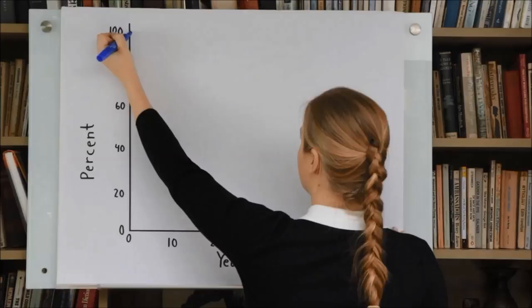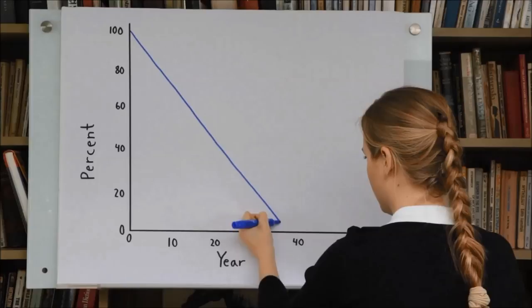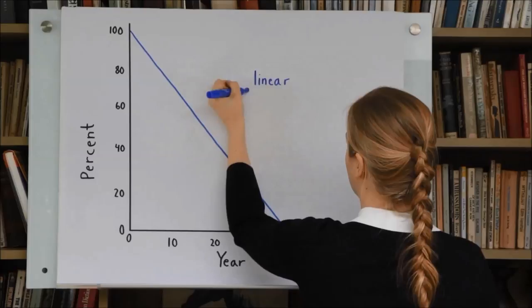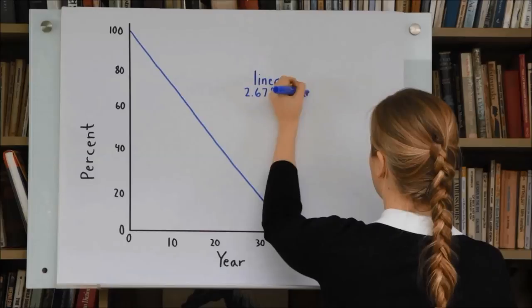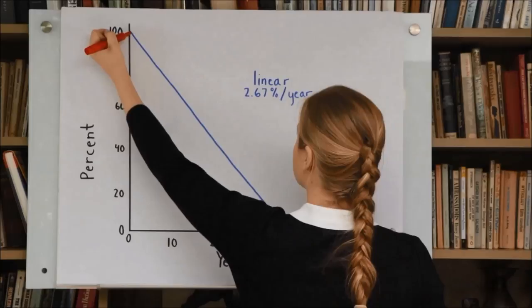Concern about the difficulty of rapid reduction may be in part a misunderstanding about the difference between exponential and linear reductions. So let's compare them. Many governments have suggested that they will reduce emissions 80% or more by mid-century. A linear reduction of 80% in 30 years is 80 divided by 30, or 2.67% of the original amount each year.